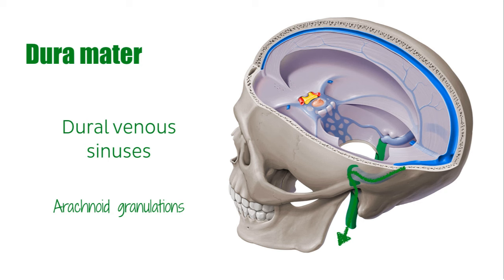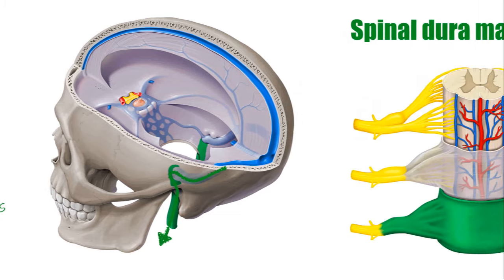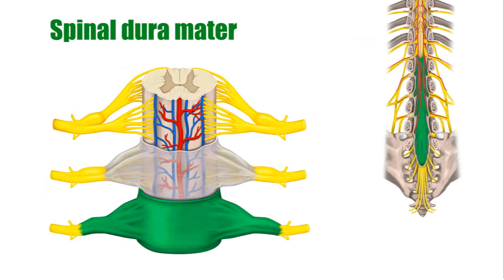Obviously you can't see these in the slide, but they're there. These granulations allow cerebrospinal fluid to move from the space between the pia mater and the arachnoid mater, called the subarachnoid space, into the bloodstream. The dura mater is also the outermost meningeal covering of the spinal cord.